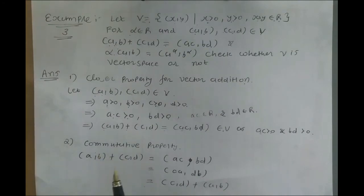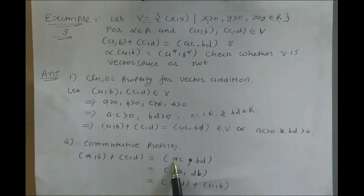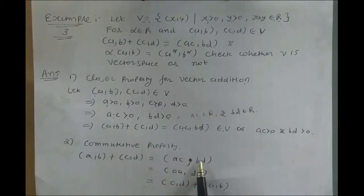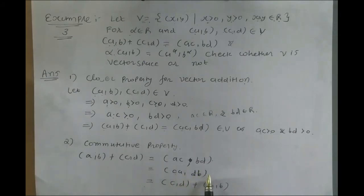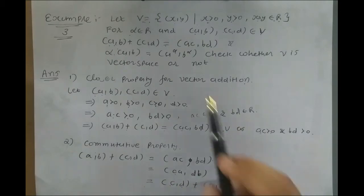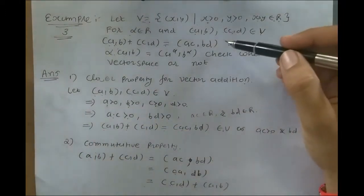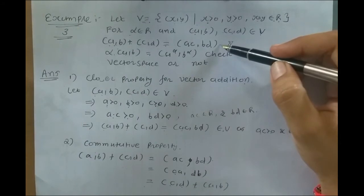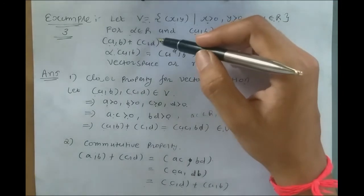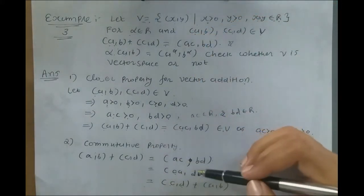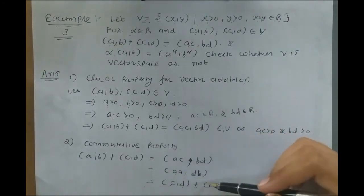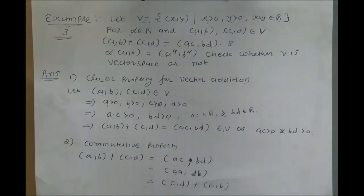Second, commutative property: (A,B) + (C,D) = (AC, BD). Since multiplication of real numbers is commutative, AC = CA and BD = DB, so (AC, BD) = (CA, DB). By the definition of vector addition, (CA, DB) = (C, D) + (A, B). Therefore commutative property is satisfied.